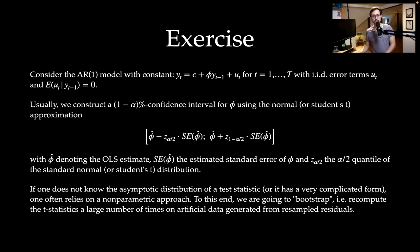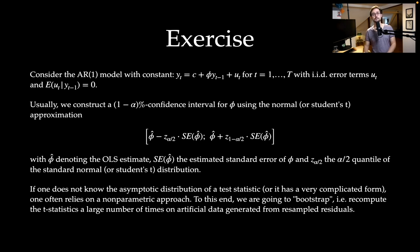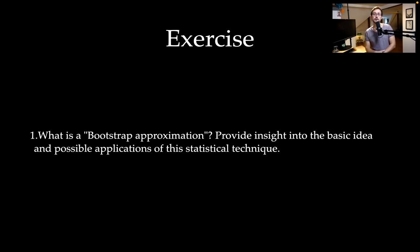We're going to recompute the t-statistic — where this distribution stems from — a large number of times on artificial data generated from my OLS residuals by resampling them. We're going to look at that nonparametrically but also parametrically, and see what happens in small sample sizes but also in large sample sizes. So first I want to talk about what a bootstrap approximation is — the basic idea and what it is useful for in time series analysis and quantitative macroeconomics.